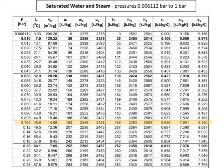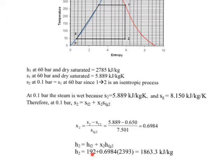So, back again to page A3 and what we have done is we are at the three columns relating to the enthalpy. 192 is the Hf and 2393 is the Hfg at 0.1 bar. So, now we got 192, 2393 with our dryness fraction we are able to calculate the enthalpy at point 2.